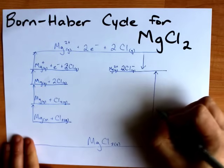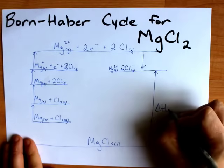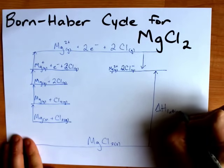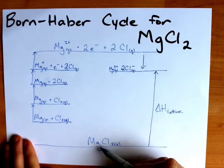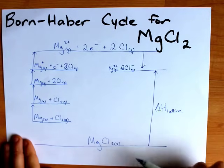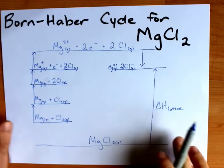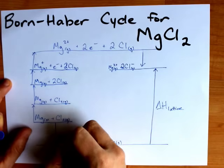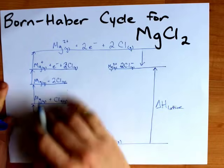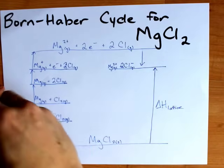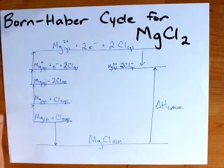This might be a good time for me to label this as ΔH lattice, because lattice enthalpy is the energy required to break a solid ionic compound into its gas phase ions. Now, it's important to label all of the other arrows so that whoever's looking at your Born-Haber cycle knows that you know what you're talking about.